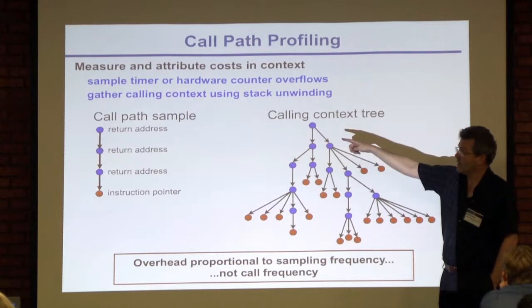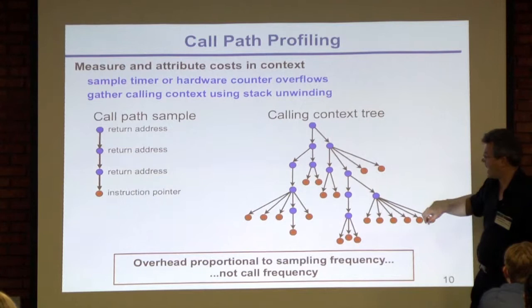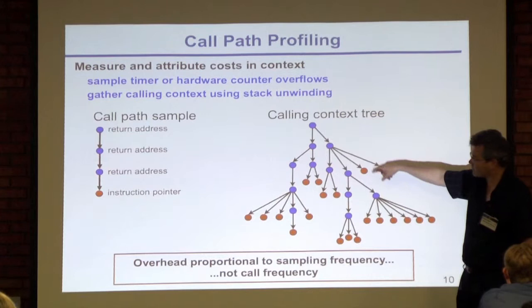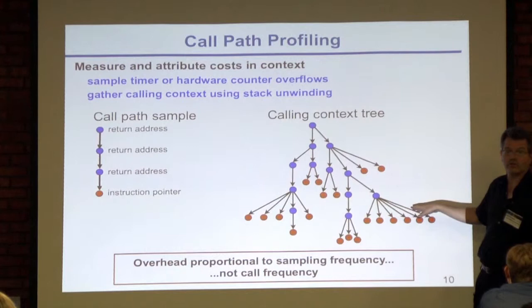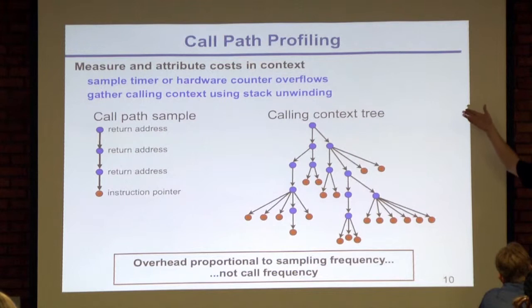For each sample, when we get an interrupt we attribute the cost to the calling context. Over the entire execution we collect what we call a calling context tree — conceptually, main at the top, with initialization and solver phases as subtrees. Interior nodes represent routines or call sites; leaves are where costs are incurred. Importantly, collecting this information is proportional to the sampling frequency, not the calling frequency, so it doesn't matter whether you have small procedures.